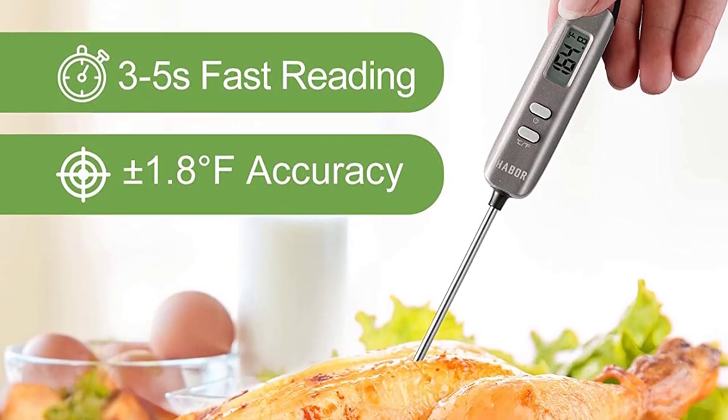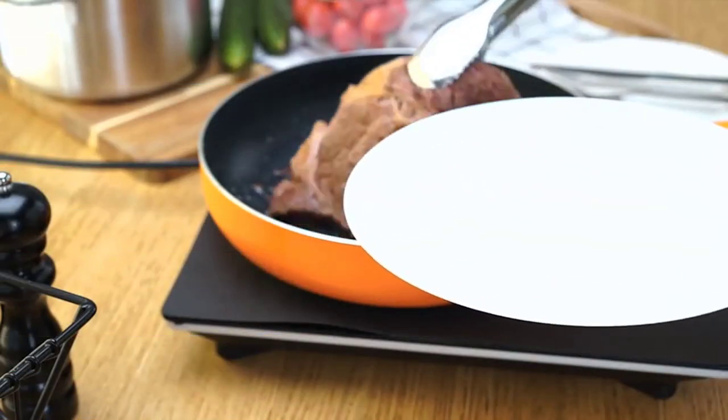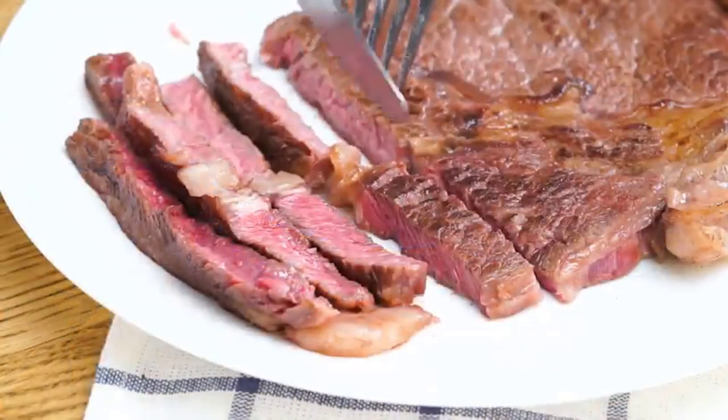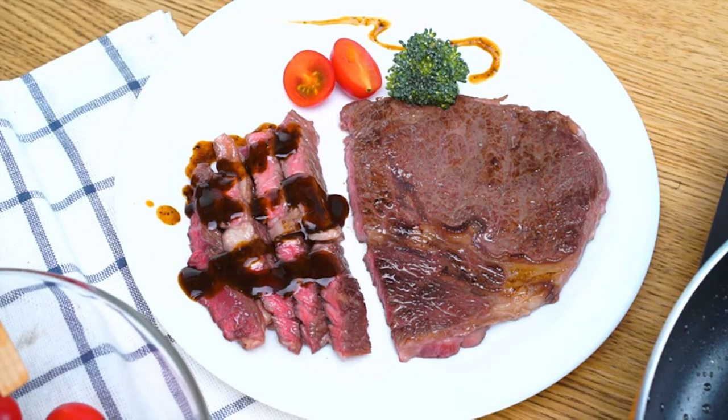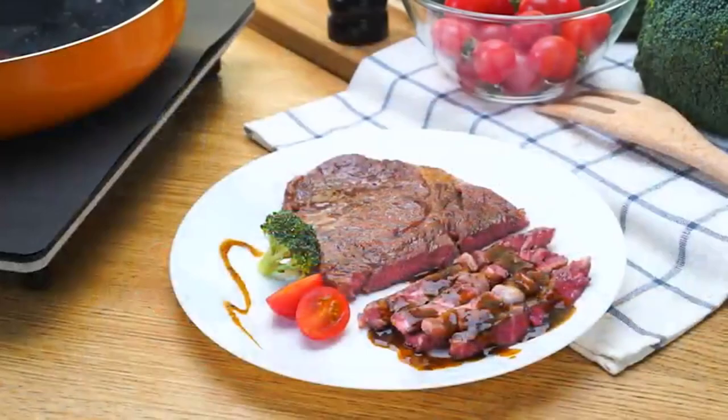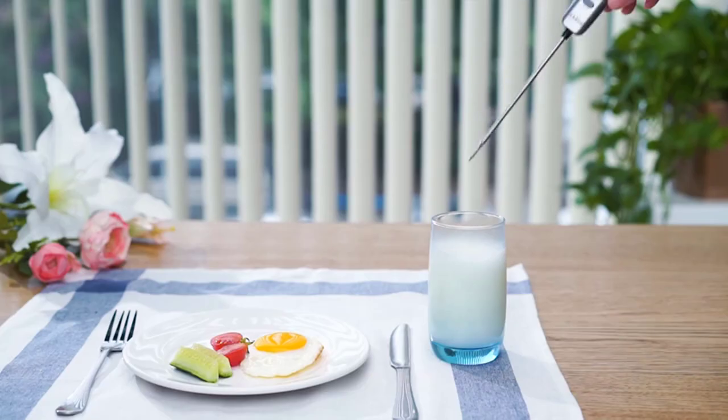This thermometer is designed with a protective cover for easy carrying and storage. The auto function will turn off within 10 minutes to extend battery life. Haber Digital Cooking Thermometer is made of stainless steel with high durability, easy to clean. And above all, the transducer is covered with a high quality, sturdy plastic lid that is not easy to be destroyed.